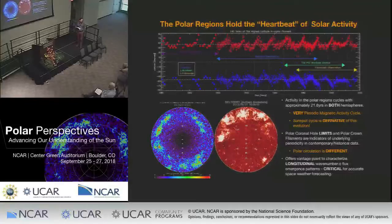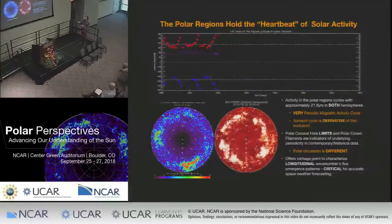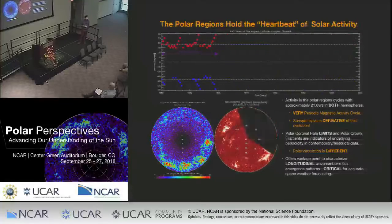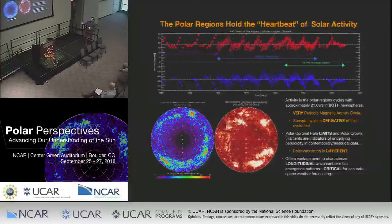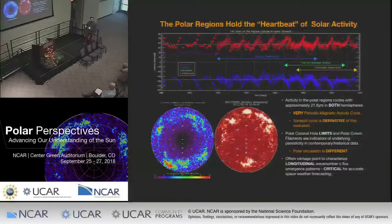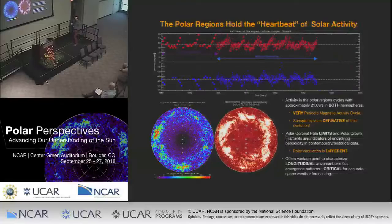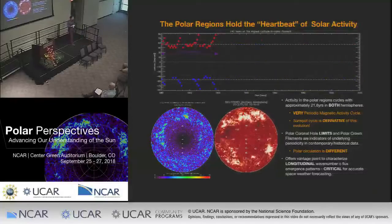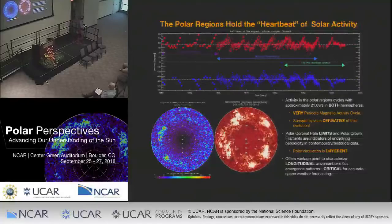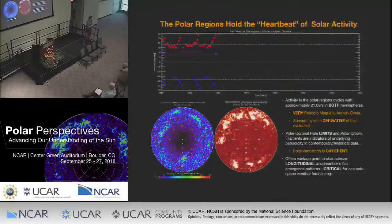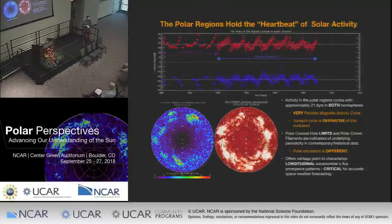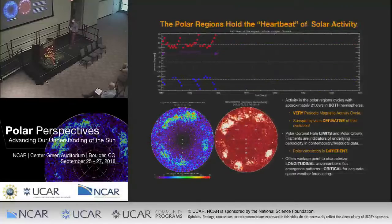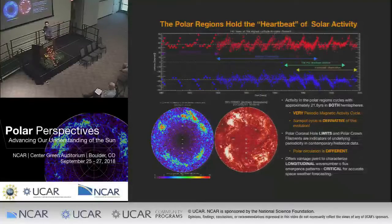Why does the polar crown filament seem to be preferentially biased towards one latitude in each hemisphere — of the order of 55 degrees again — before it migrates off? This is 140 years of data, this is no fluke. There's a pattern that repeats and repeats and repeats. It's 55 degrees, or thereabouts, with a deviation of a few degrees — a recurrent preferred latitude. It's also the latitude at which the polar crown hole is bounded. There is something going on with convection and circulation at high latitudes.